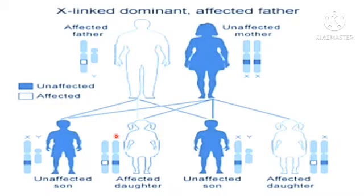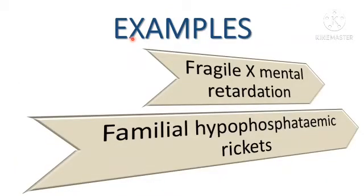All daughters will be affected if the father is affected, and all sons will be normal. With four children the probability is 25% each. Examples of X-linked dominant disorders include fragile X mental retardation and familial hypophosphatemic rickets.